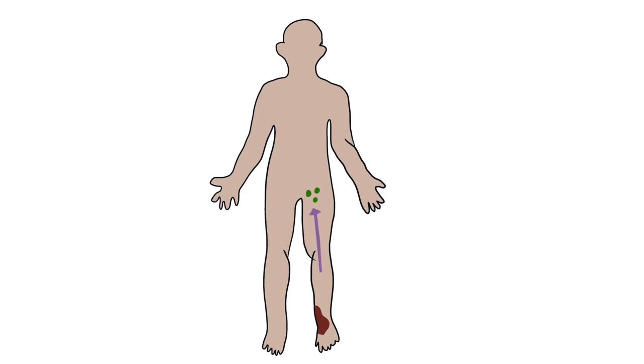Metastatic spread is mostly limited to regional lymph nodes. However, distant metastases can also be seen to organs like liver, lungs, and brain.